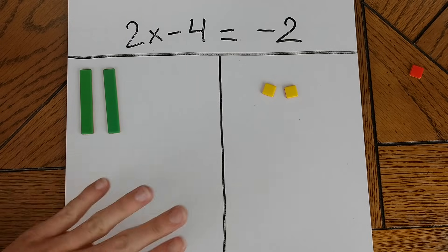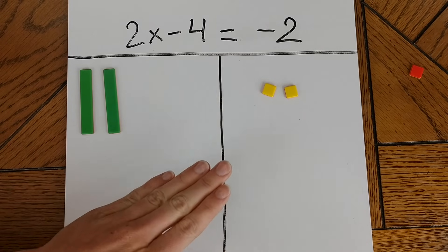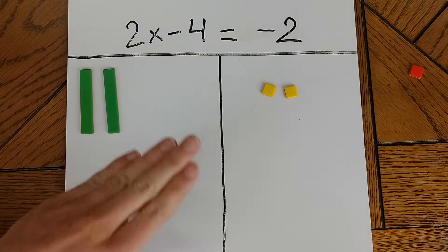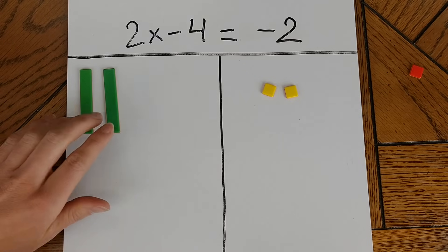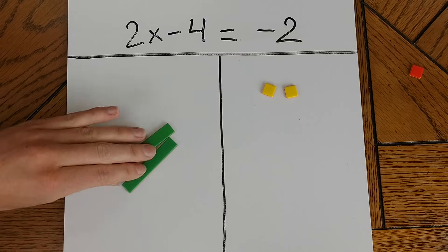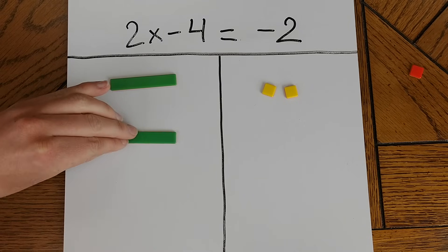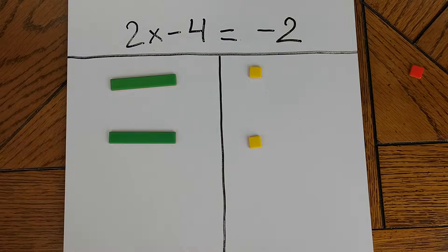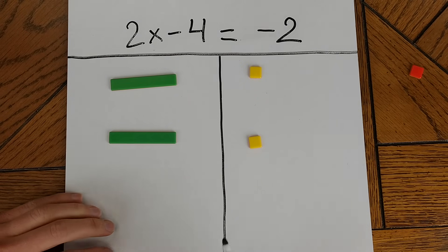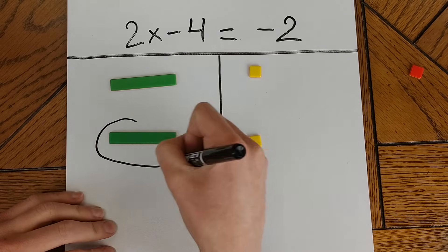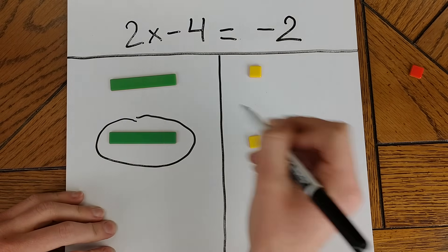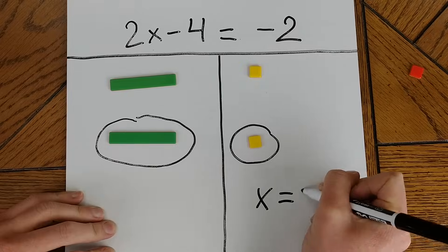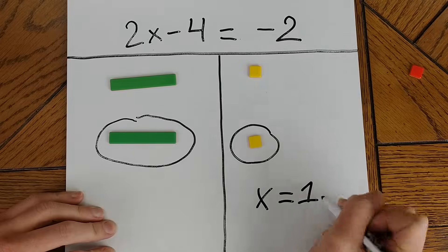That takes care of the first step, but I still don't have x by itself — I have 2x. So just like in the last example, I'm going to split each side of my equation up into two equal groups. This shows me that the value of 1x is equal to 1 unit. In other words, x equals 1.